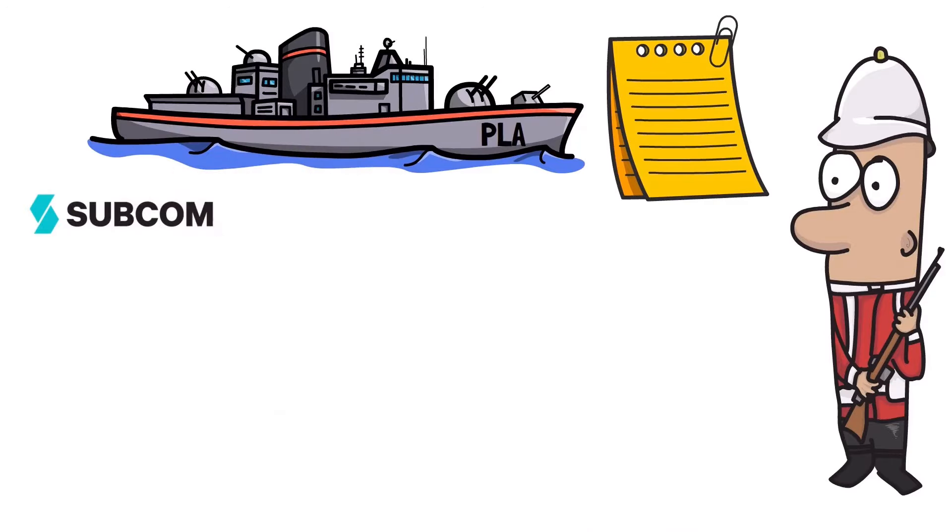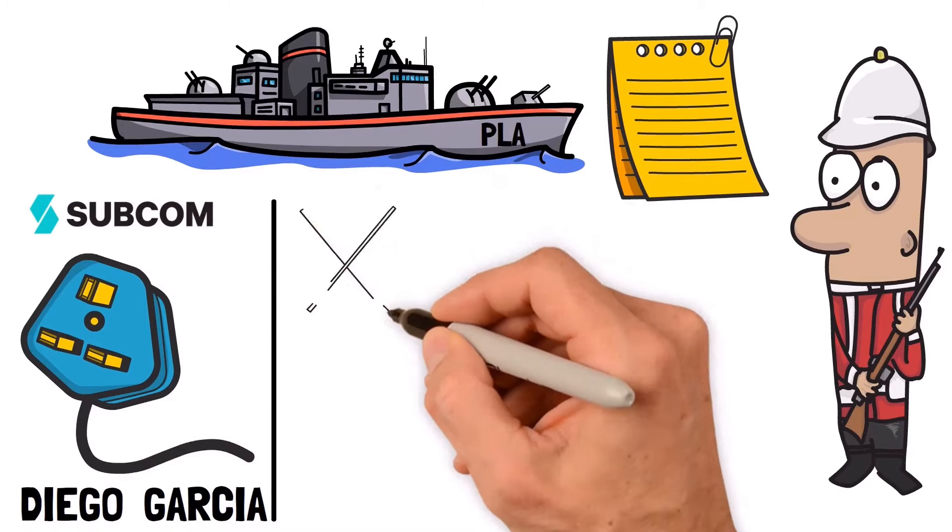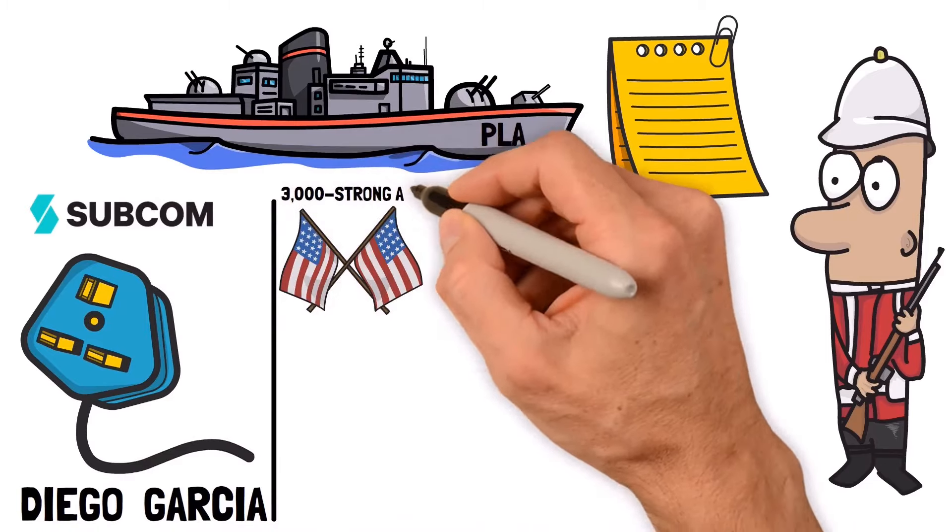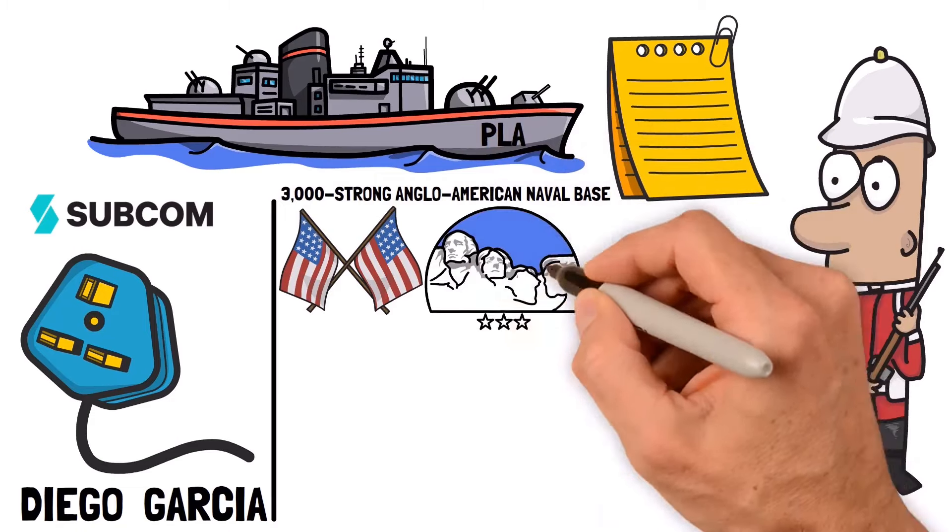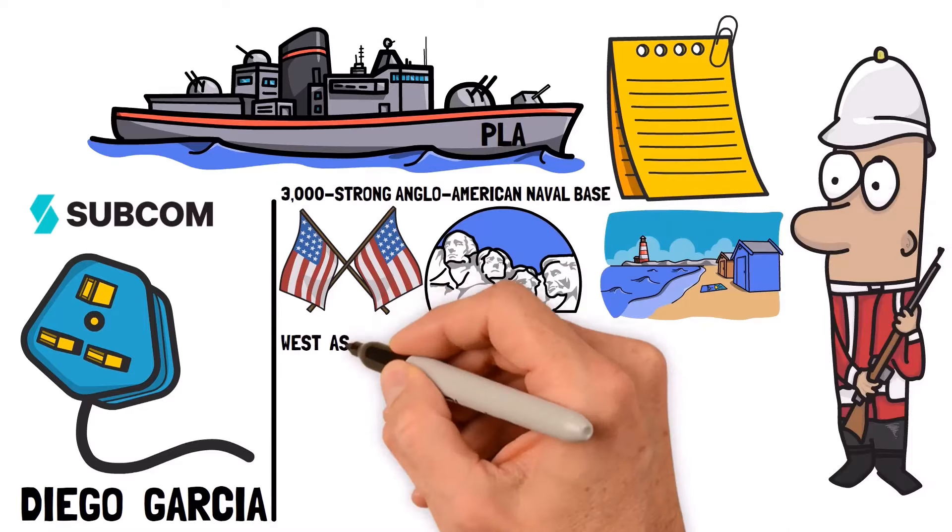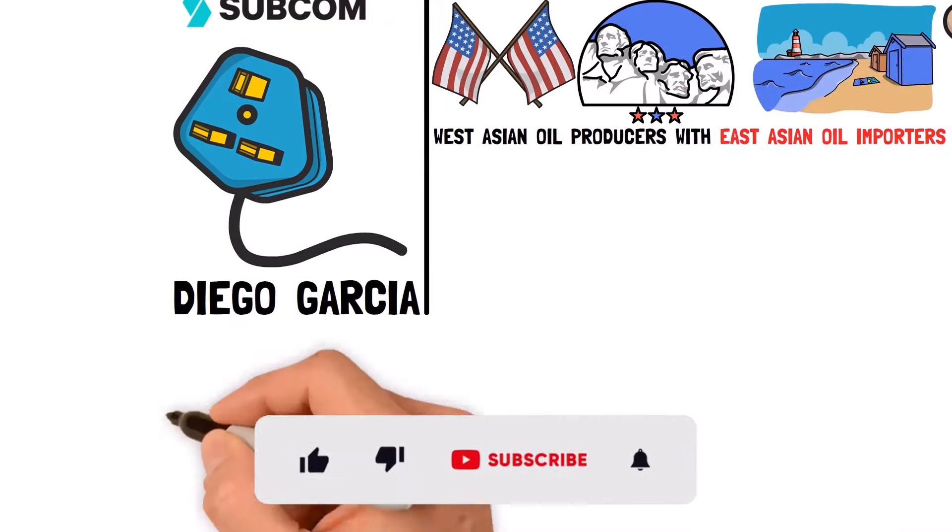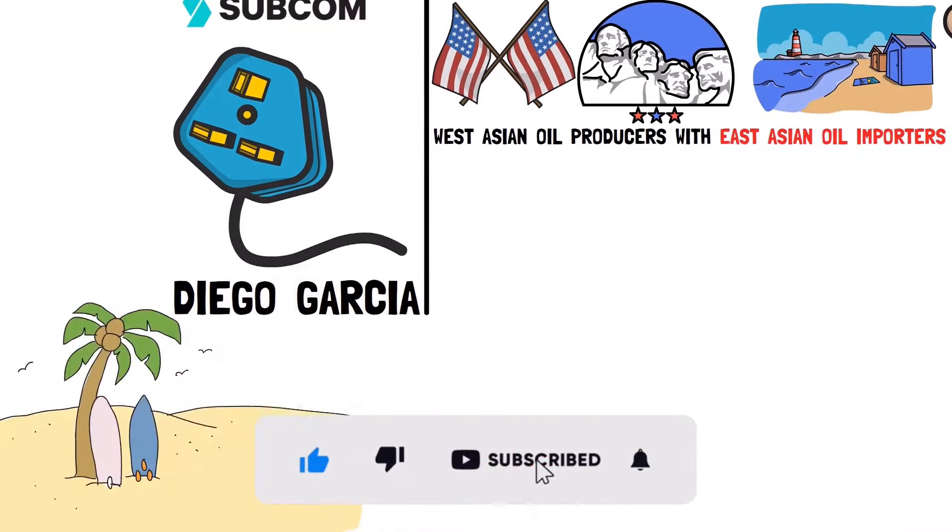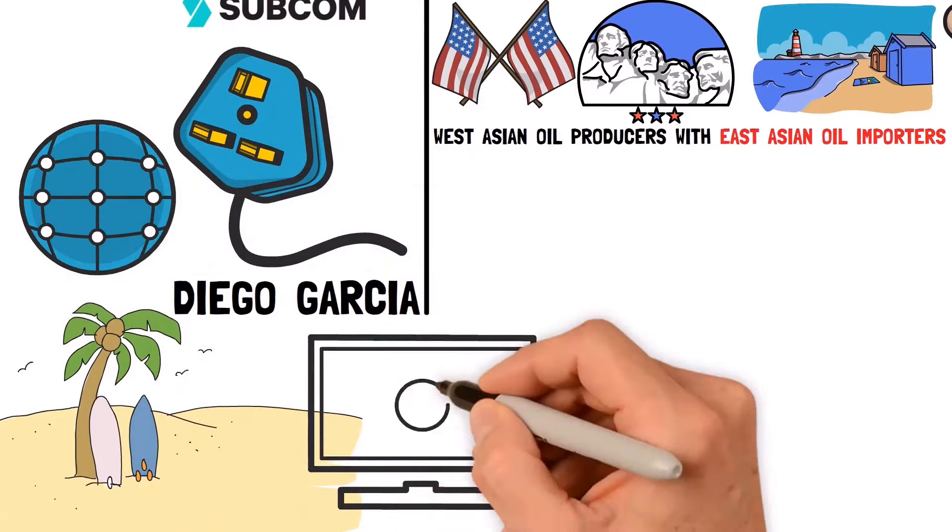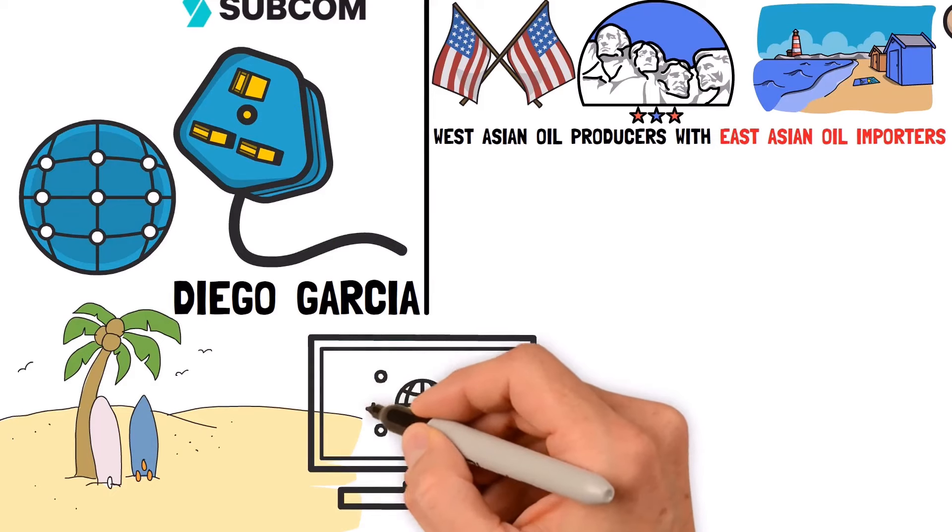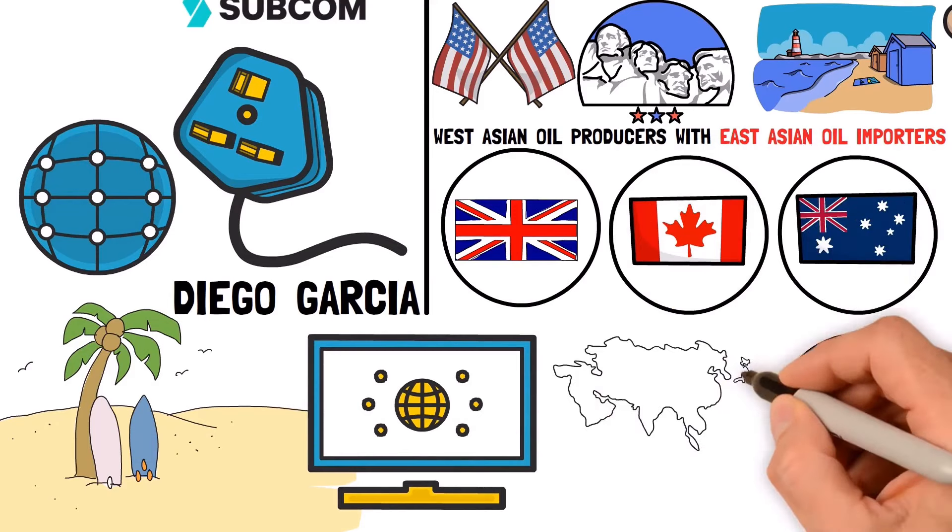Subcom is also in pole position to lay a new cable to Diego Garcia. The British-administered Atoll hosts a 3,000-strong Anglo-American naval base. Its central location allows Washington to project power over vital sea lanes connecting West Asian oil producers with East Asian oil importers. Nowadays, the island serves not just as a naval base but as a data nexus for the Five Eyes intelligence sharing network which connects the intelligence agencies of the United States, the United Kingdom, Canada, Australia and New Zealand.